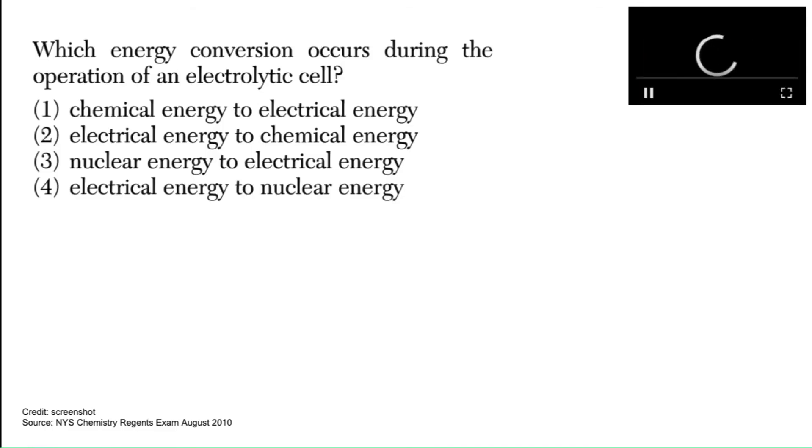Let's do a couple of practice problems. Which energy conversion occurs during the operation of an electrolytic cell? Read the options think about your answer choice and pause the video if you need more time. So an electrolytic cell remember is a cell that requires electrical energy to get it started. That's how I like to remember it. Electrolytic requires electrical energy to start it. So electrical energy is needed to start the reaction and chemical energy is the energy conversion that the energy that is made. So the energy conversion is electrical energy in chemical energy out.